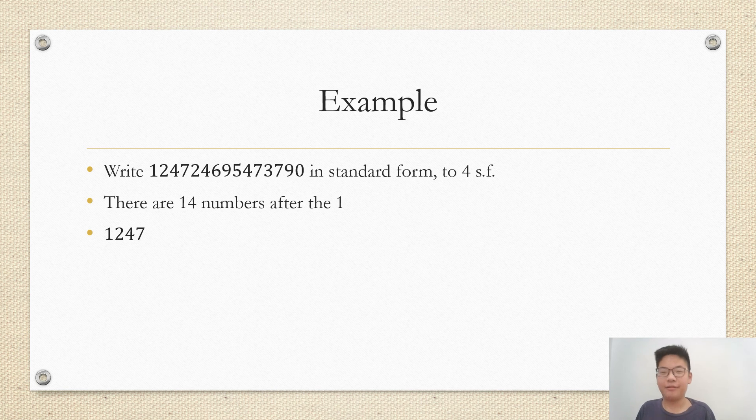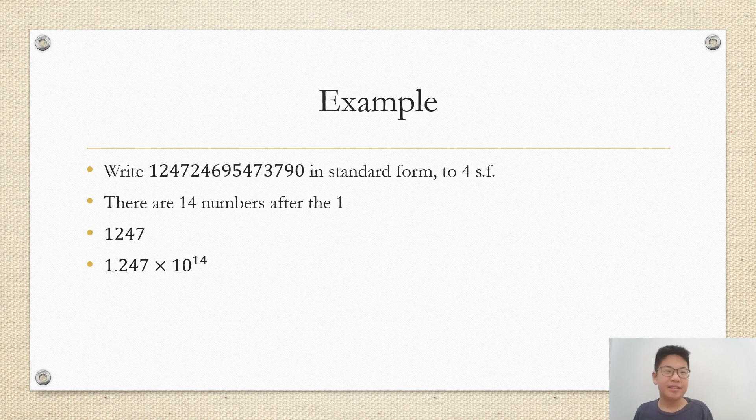We check the next digit, it's greater than 5 hence we round up, so we write 1247. Then since there are 14 numbers, we write 1.247 times 10 to the power of 14. Remember it is always between 1 and 10.